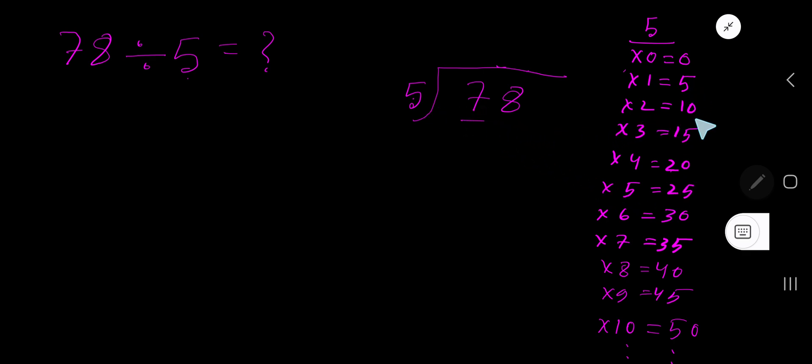5 goes into 7 how many times? 2 times is 10 which is greater, so 1 time. 1 times 5 is 5. Subtract to get 2, bring down the next digit: 28.